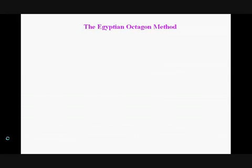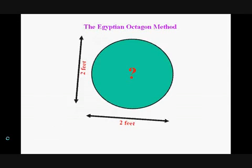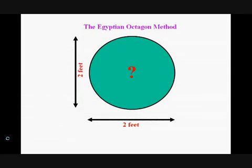The Egyptian octagon method: Draw a square around the circle just touching it at 4 points. What's the area of this square?